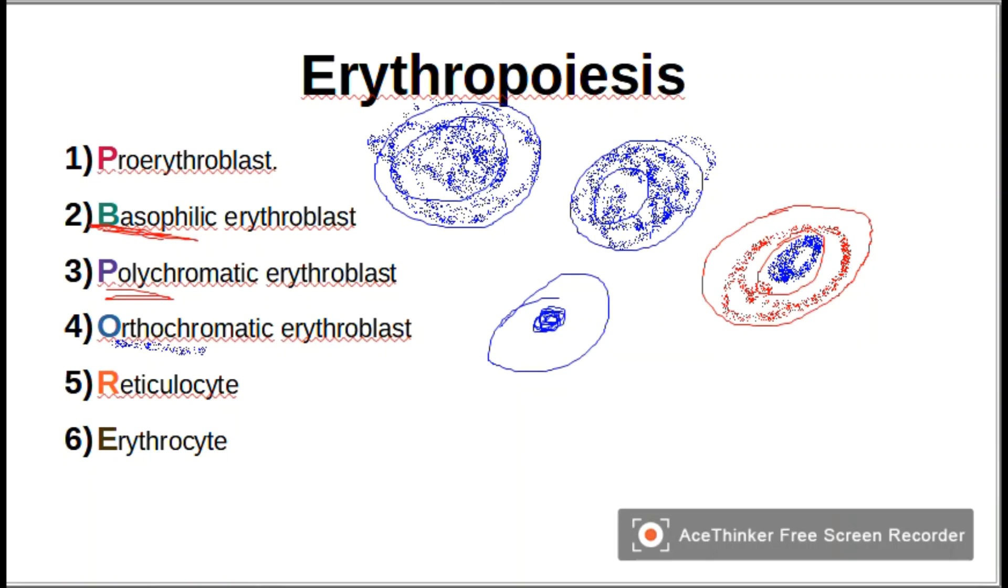It stains ortho, meaning it stains red, because it has a high amount of hemoglobin compared to the first one. It's also called acidophilic.